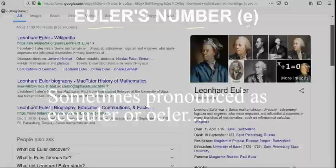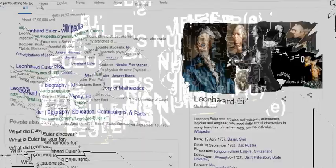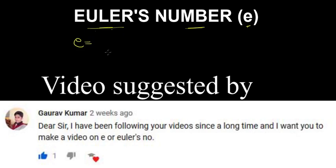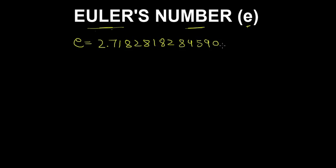This video is about Euler's number, denoted by e, which was named after Swiss mathematician Leonhard Euler. Euler's number is an irrational number with a value of 2.7182818284590 and so on.